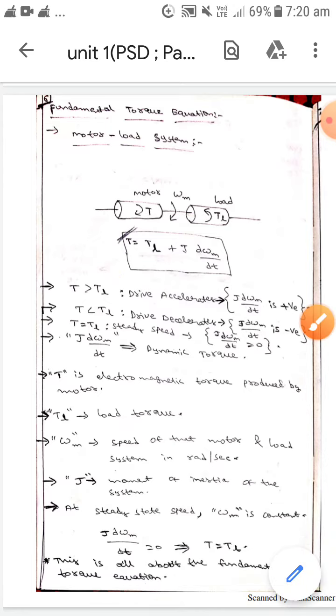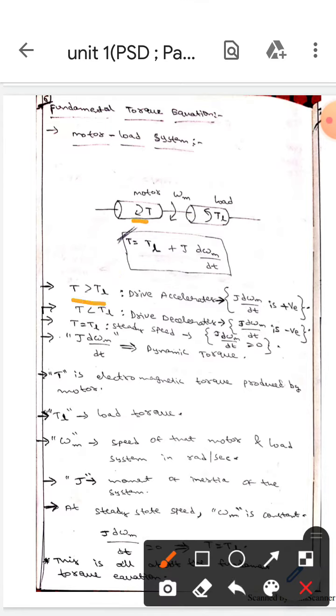Here if T is greater than TL, then the electrical drive accelerates, which means J × dωm/dt is positive.